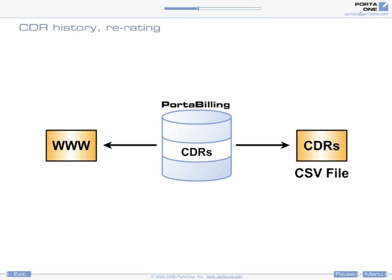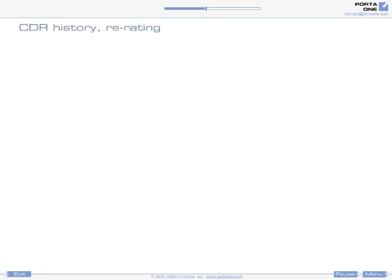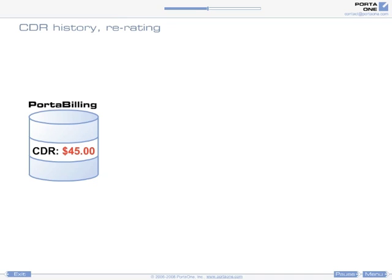These files are permanently stored for purposes of auditing or conflict resolution and can be backed up on external media. In this way, you always have the complete information, even if the CDRs in the database have been purged to save space. It may happen that the billing contains incorrect CDRs due to an operator error, for example, typing an incorrect number in the price per minute column.